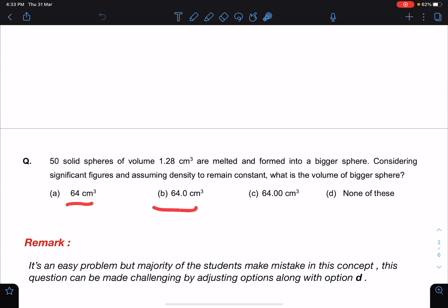64 is given in all three options and there is one none of these, so we have to go for the actual measurement. When we are writing 1.28 we are sure about this digit and this digit also during the measurement. That means this measurement is done by using some instrument which is having least count of 0.01 unit. So my answer also should be based on these two significant digits.